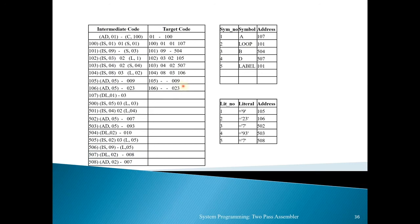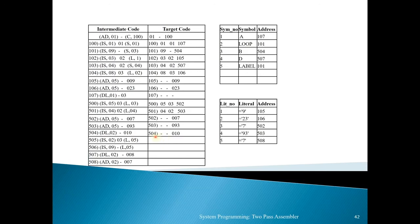For the LTORG assembly directive statement, no opcode is written, so the first and second fields are dash, and the constant value (the literal value) is written — giving '- - 009' and '- - 023'. For the declarative storage (DS) statement, no target code is generated — all fields are dash. For imperative statement (IS,05)(03)(L,03) — MUL, CREG, address of third literal = 502, giving '05 03 502'. Next (IS,04)(02)(L,04) — SUB, BREG, address of fourth literal = 503. For the LTORG, dash dash with constant value '007'. At address 503: dash dash 093.